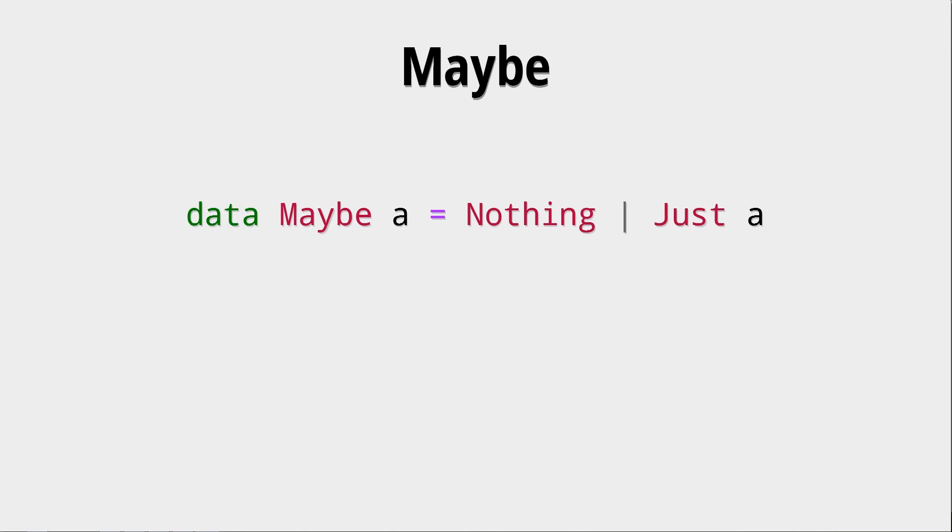The question might be, why do we need this Maybe? Let's look at a function, an arbitrary function f and an arbitrary argument x. This function should return a result.